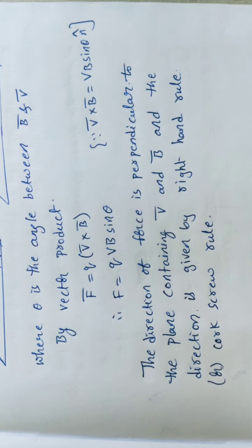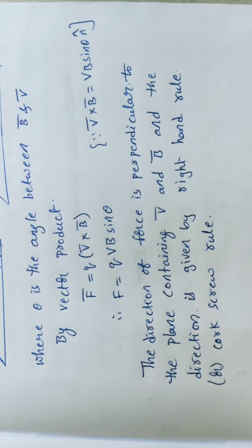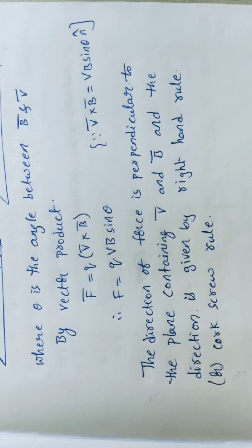After completing this, I want to discuss a few cases. I will discuss three cases: first, a charged particle at rest in the magnetic field; second, the charged particle moving parallel or anti-parallel to the magnetic field; and third, the charged particle moving perpendicular to the magnetic field.